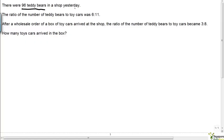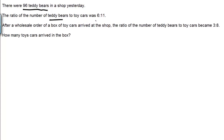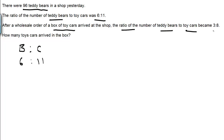There were 96 teddy bears in a shop yesterday. The ratio of the number of teddy bears to toy cars was 6 to 11. Now after a wholesale order, a box of toy cars arrived at the shop, and the ratio of the number of teddy bears to toy cars became 3 to 8. This first ratio is what there was before, and the second is after.